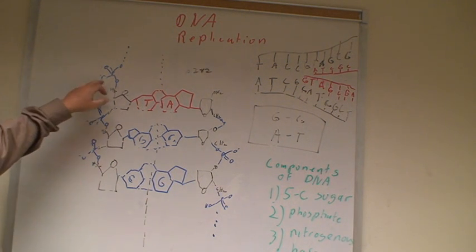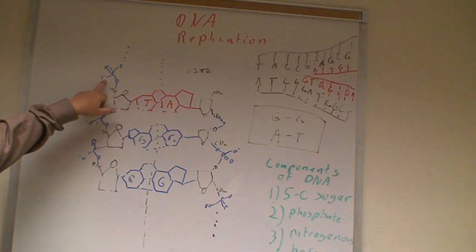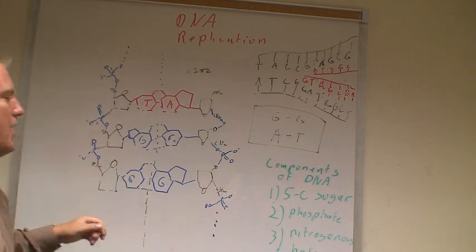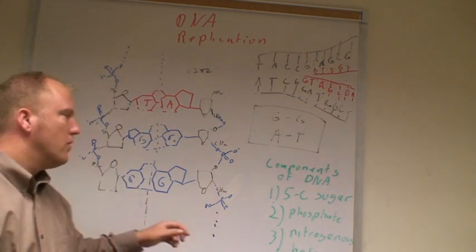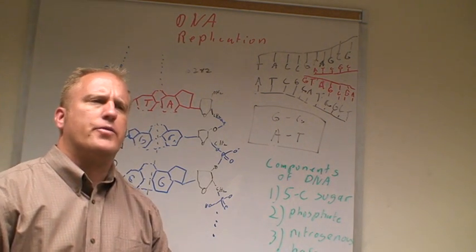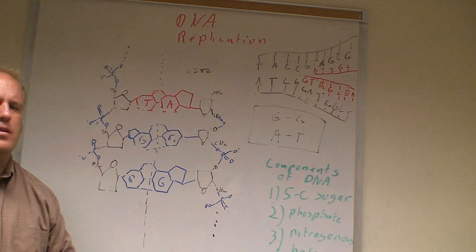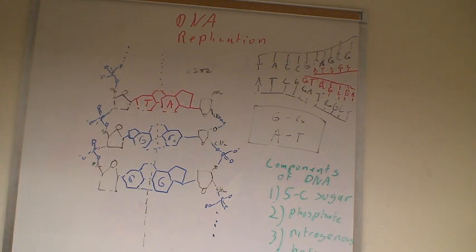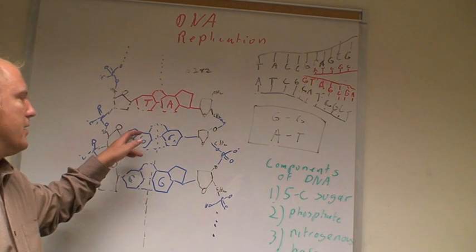What are the other two components? That's right, there's a phosphate group shown here and finally in the center we have the nitrogenous bases. Why are they called nitrogenous bases?